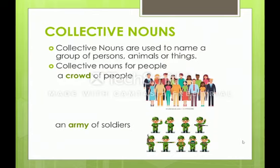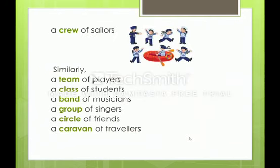Let me give you a few examples of collective nouns for people, animals and things. For people: can you see a group of people standing here? A group of people is called a crowd — 'a crowd of people.' Crowd is a collective noun for people. Similarly, an army of soldiers — army is a collective noun for soldiers. A crew of sailors — crew is a collective noun for sailors.